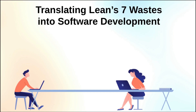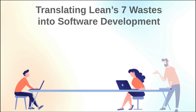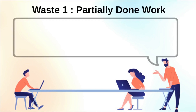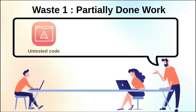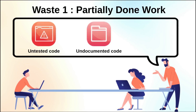Let's discover these seven wastes. First, we have partially done work. So code that is completed but not checked into the repository, undocumented code, untested code, or code that's not yet in production. This is a problem because it delays the delivery of value. In the case of undocumented code, this will likely lead to quality issues or delays in the resolution of issues.